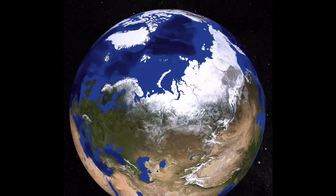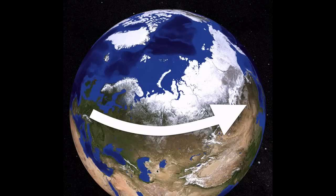The Earth rotates at the equator at a rate of about a thousand miles per hour. If we use that math, we can figure out that every hour the Earth completes a 15-degree rotation. Factoring in that the Earth rotates 24 hours in a day, our total trip after one day is 360 degrees.